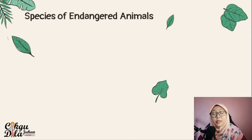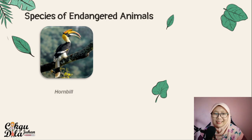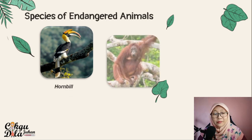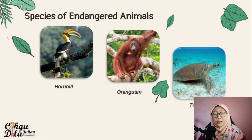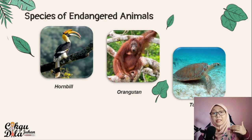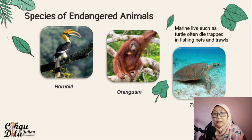Now we look at endangered species. Examples include the hornbill, the orangutan, and turtles — animals that are facing extinction, with their numbers reducing year to year. Marine life such as turtles often die trapped in fishing nets and trawls.